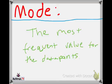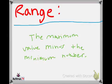So next we have the mode. The mode tells us the most frequent value of the data points. And finally, the range, which is the maximum value minus the minimum value.